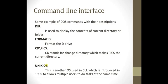The second example of command line interface is the Unix operating system. Unix is also a type of command line interface in which we have many commands. To do any task we enter commands. Unix was invented in 1969. Unlike DOS it supports multiple users at the same time and allows multiple tasks to be performed.